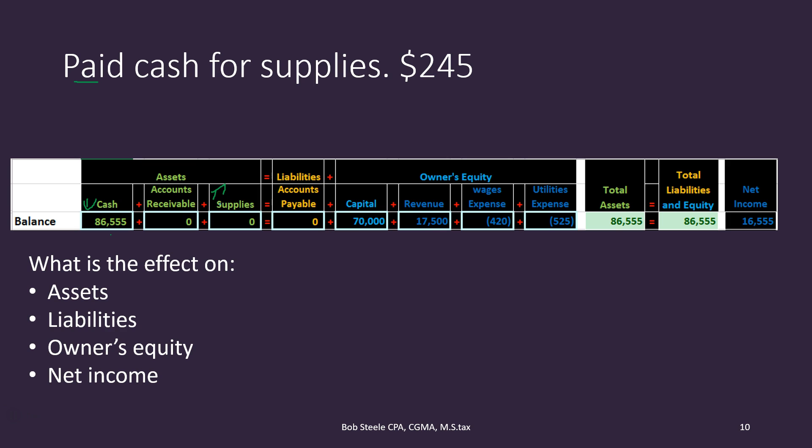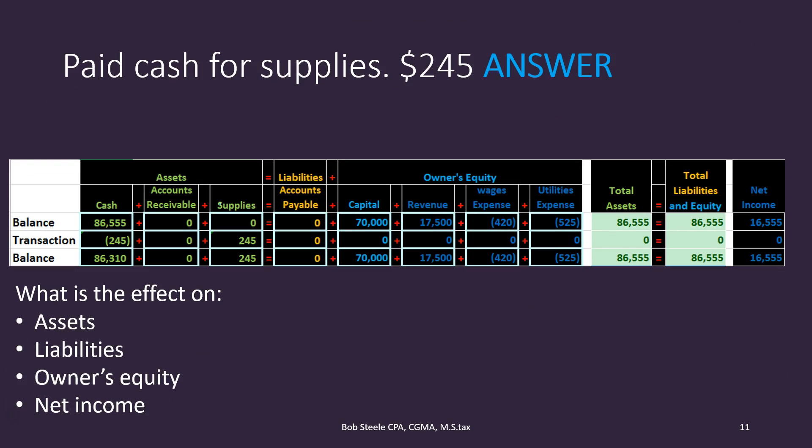Assets have to equal liabilities plus owner's equity. That's a bit unusual — later when we talk about debits and credits, we won't have this situation where there's no net effect on the accounting equation even though two accounts are affected. That's why debits and credits work better. There's no effect on total assets even though cash went down and supplies went up.